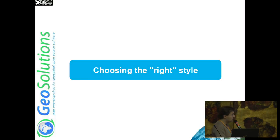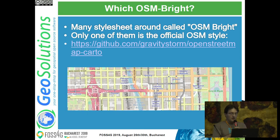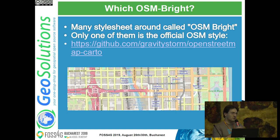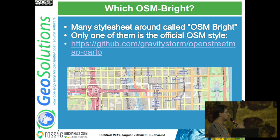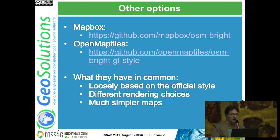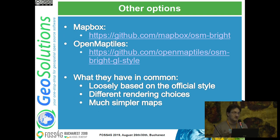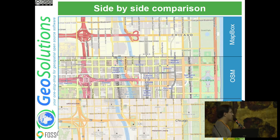First of all, choosing the right style. When you look at OSM, the map rendering you look at is called OSM Bright. There are many OSM Bright sort-of clones on the network, but there is only one that actually renders like openstreetmap.org, and it's at gravitystorm/openstreetmap-carto. It's a Carto CSS stylesheet which gets rendered by Mapnik. There are other options like the Mapbox OSM Bright and the OpenMapTiles OSM Bright style - they are loosely based on the official style but with different rendering choices and much simpler maps.